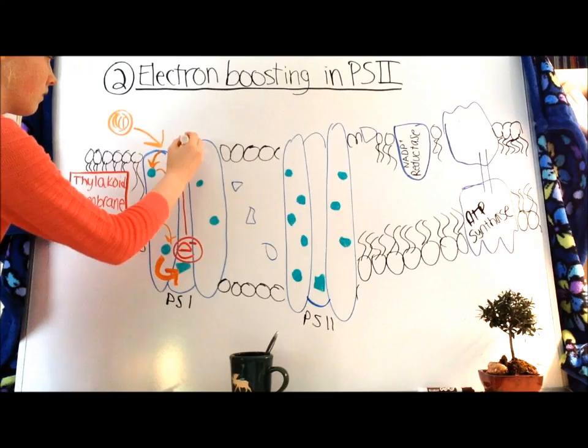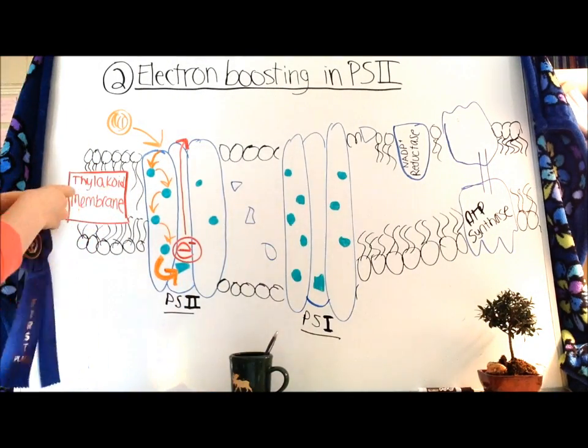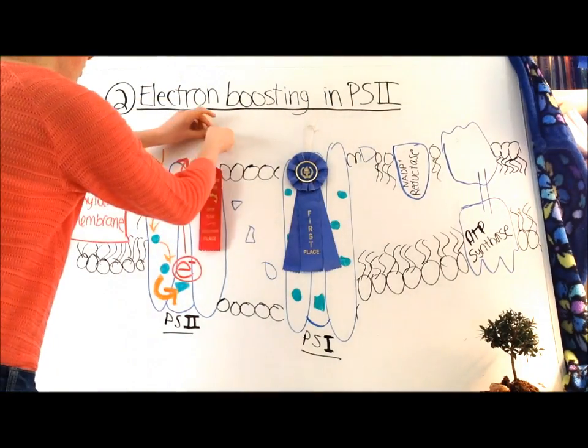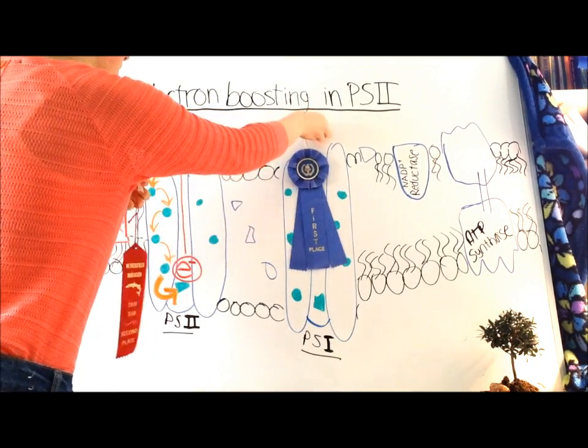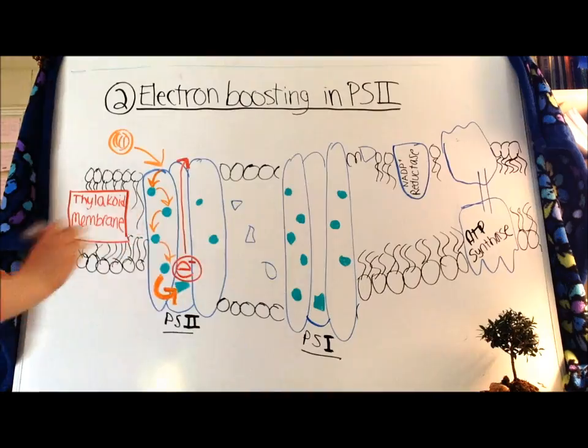The photon excites an electron in the reaction center of Photosystem II. If you're wondering why the first photosystem is called Photosystem II, it's because PS1 here on the right was discovered first. And then later on, Robert Emerson and Eugene Rabinowitz discovered another photosystem, which we know and love, Photosystem II.